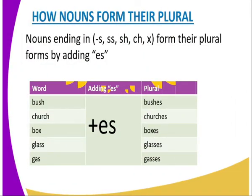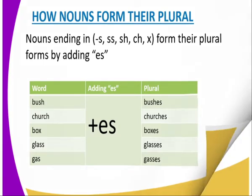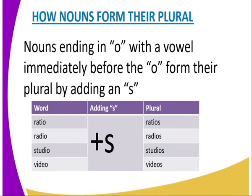We also have how nouns form their plural with endings such as S, double-S, SH, CH, and X. These also form their plural by adding -ES. Examples: bush to bushes, church to churches, box to boxes, glass to glasses, gas to gases.